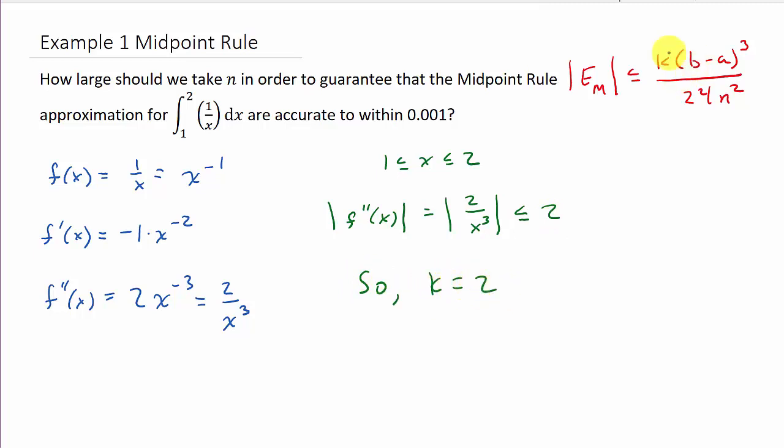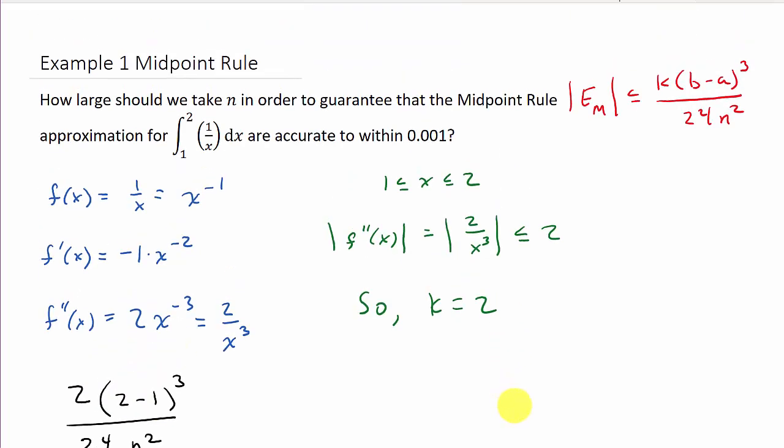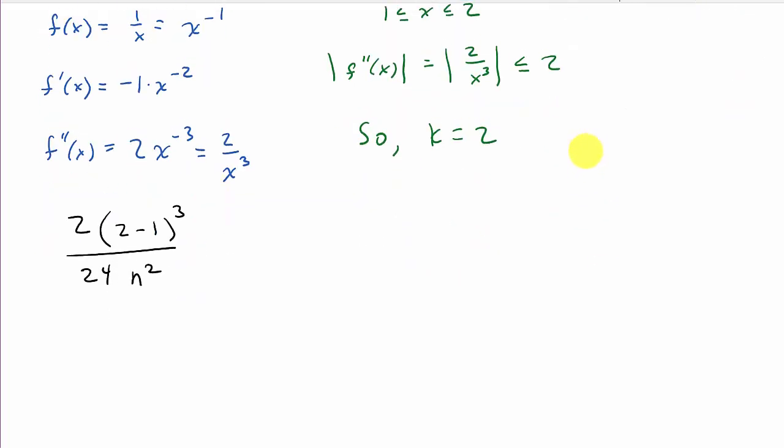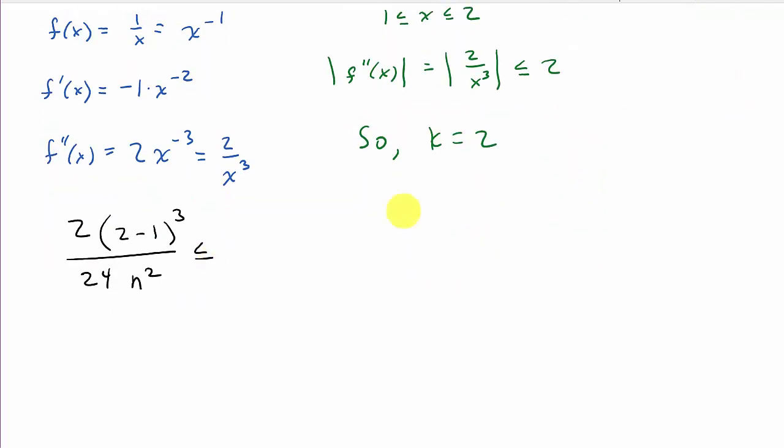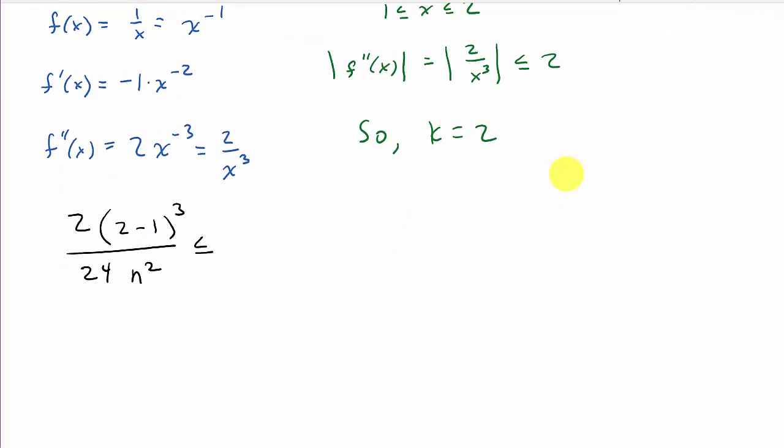And now, we just plug everything into here. So, I've got k is 2 times, now remember, b minus a, so that's 2 minus 1, and that's cubed over 24n squared. See, I just plugged everything into this thing here. And I need that to be less than or equal to 0.001. So, 0.001. And now, we just solve for n.